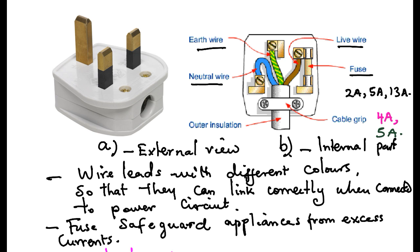The color codes are also important. Live wire is normally colored red or brown. The neutral wire is colored blue or black, or green with yellow strips.